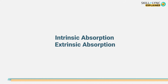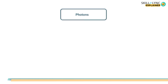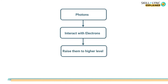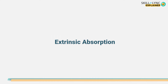Absorption losses are further classified into intrinsic absorption losses and extrinsic absorption losses. In the optical fiber, the light-carrying particles are called photons. These photons, when interacting with the electrons that are present inside the fiber, are absorbed by the electron and raise them to a higher energy level. This results in a loss of light signal and is called intrinsic absorption.